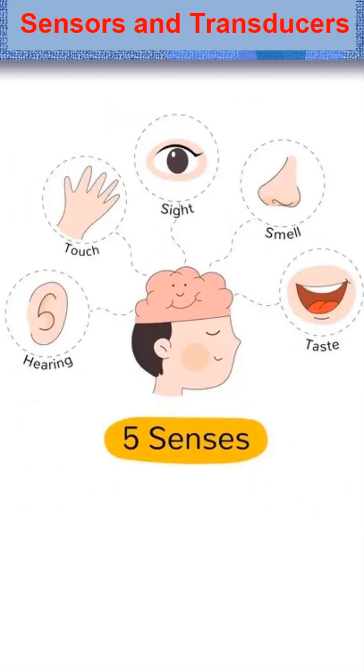Because of sensory organs like eye, nose, tongue, ear, and touch, we get information from our surroundings and we act accordingly. Without sensory organs, we cannot think of the life of human beings.